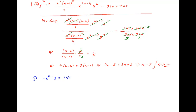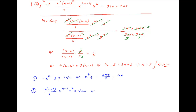Recalling equation 1, which is n times x^(n-1) times y equal to 240, and substituting n = 5, we get x^4 times y equal to 240/5, which is equal to 48. Recalling equation 2 and substituting n = 5, we get 5 times 4/2 times x³ times y² equal to 720, which implies x³ times y² is equal to 72.